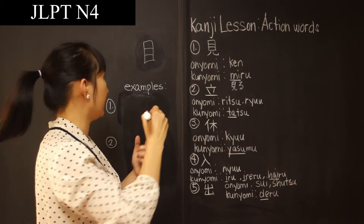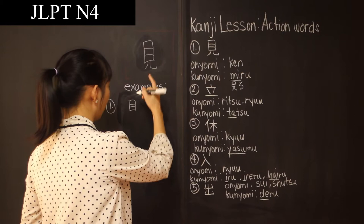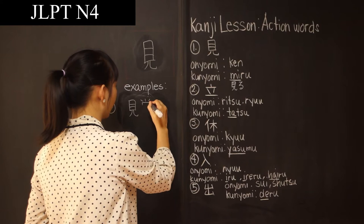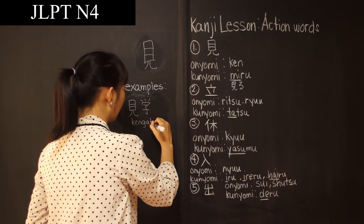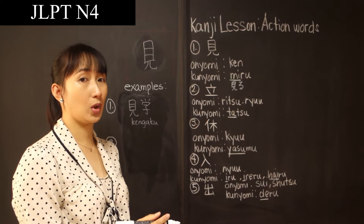The examples that I have for you for this kanji are Kengaku — Ken, this kanji, plus Gaku or the school kanji. Kengaku means study by observation, or just field trip. The other example is the word Mieru, which means can see, or Mite is also okay.